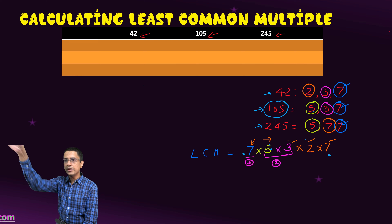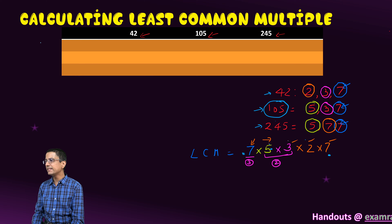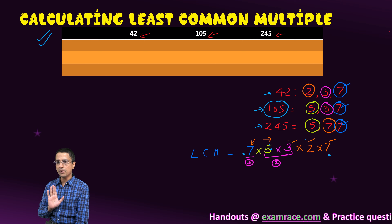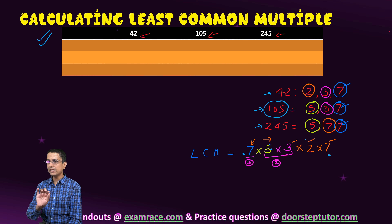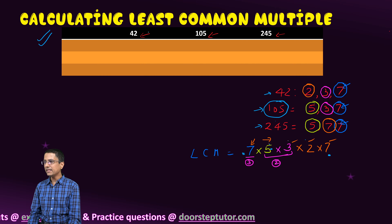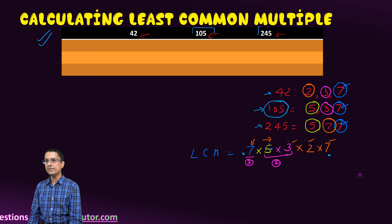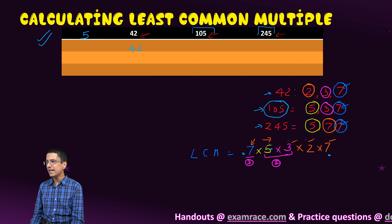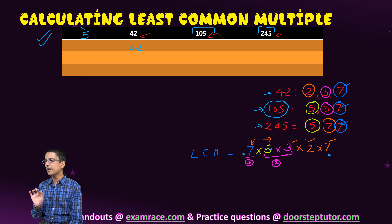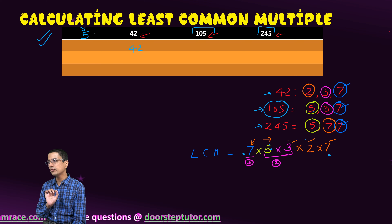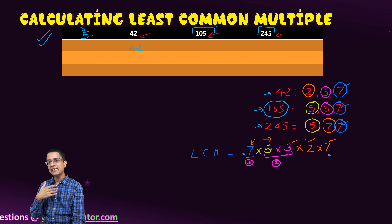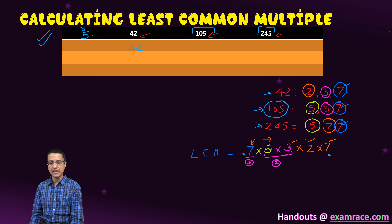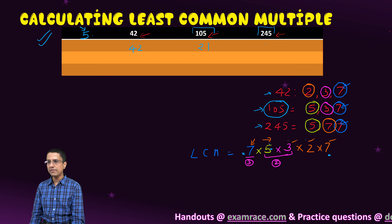Now let us look at the next method of doing the same LCM — this is a bit more systematic and is our preferred method. We start by writing the numbers in tabular form. The first thing we do is see that two of the numbers are divisible by 5, so we start by dividing by 5. 42 is not divisible, so it comes as is — and notice this is the difference from HCF. Here we choose a number that divides at least two numbers, so 5 divides 105 and 245.